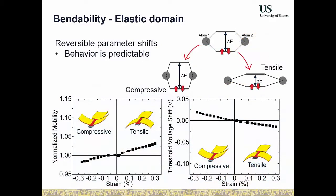We still have the problem of parameter shift before crack formation, which can't be solved by changing the structure. We must analyze and understand it to design circuits accordingly. Measurements of threshold voltage and mobility — and similarly sub-threshold swing — for tensile and compressive strain in the elastic region show very linear behavior, which is good because it means we can easily model it, linked to standard strain effects in semiconductors like effective mass and band gap changes.